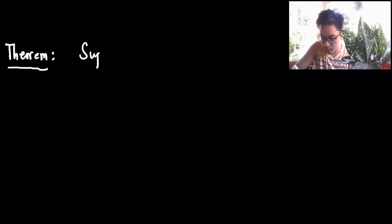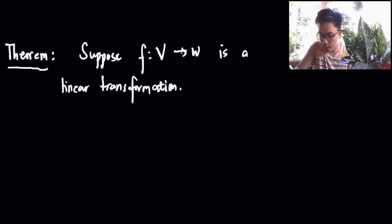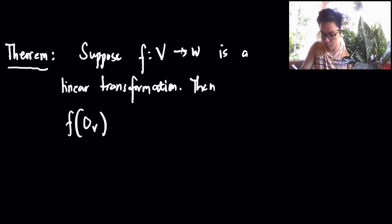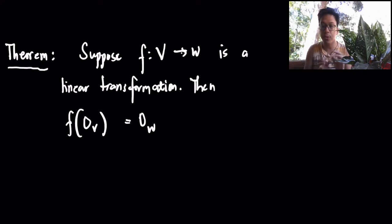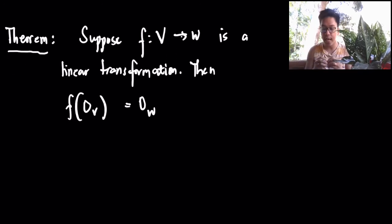So let's start now with the first theorem. Suppose that you have a linear transformation from V to W — suppose F from V to W is a linear transformation. Then F of 0 is actually 0. The 0 here is coming from your domain, and the 0 here is coming from your codomain. That will be the first theorem: a linear transformation sends the identity element of its domain to the identity element of the codomain.